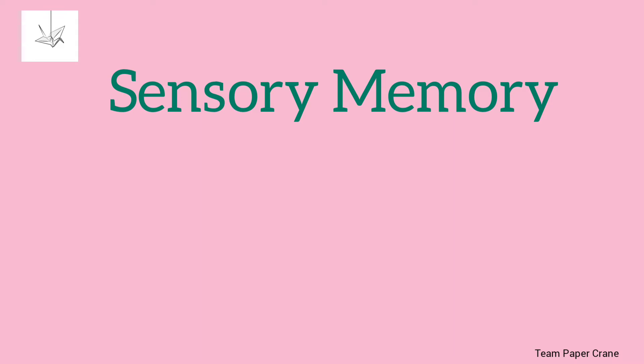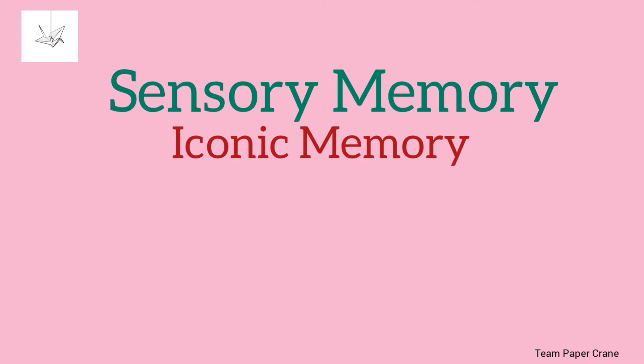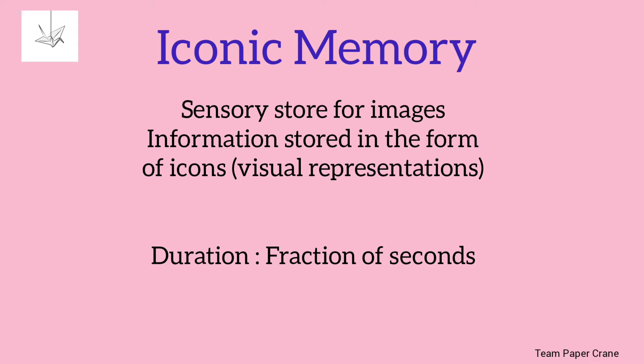Sensory memory is called the initial repository. Our sensory memory is divided into types. The sensory store for images is called iconic memory. Visual memory, visual representations, icons, and visual images are stored in iconic memory.